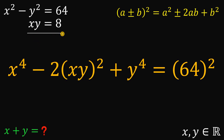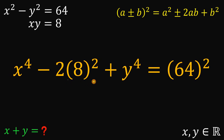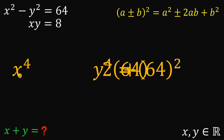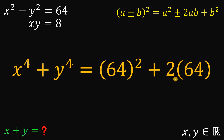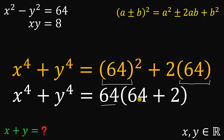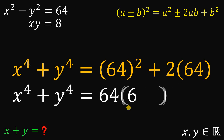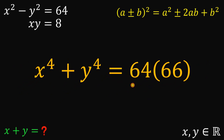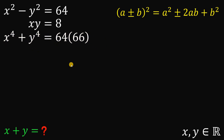We are given that x times y equals 8, so we can replace xy with 8. And 8 raised to the power of 2 is just 64. Now let's add 2 times 64 on both sides, giving us x raised to the power of 4 plus y raised to the power of 4 equals 64 squared plus 2 times 64. We can factor out 64, giving us 64 multiplied by 64 plus 2, which is 66. So x⁴ plus y⁴ equals 64 times 66, which is equivalent to 65 minus 1 multiplied by 65 plus 1. Let's set aside this result for later.